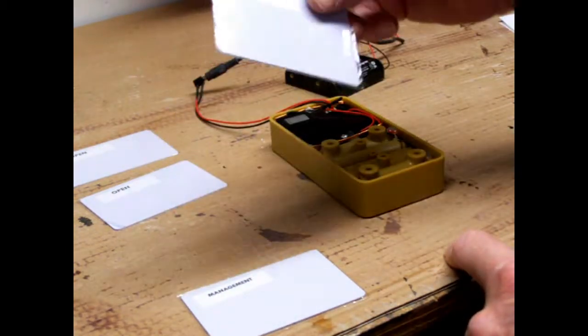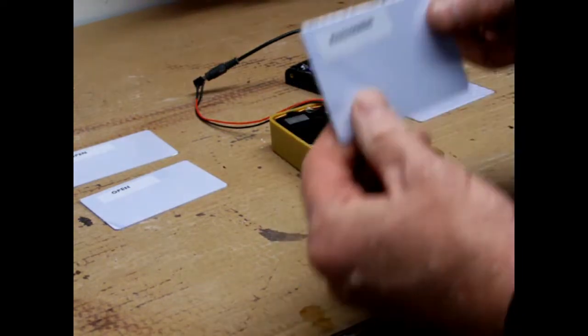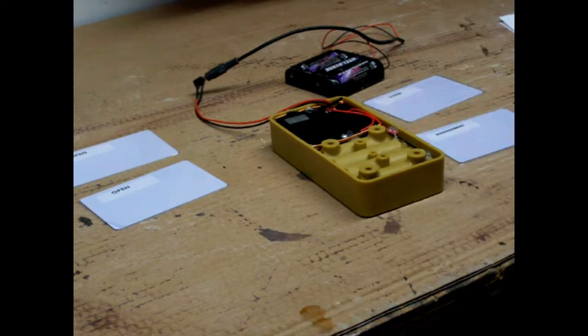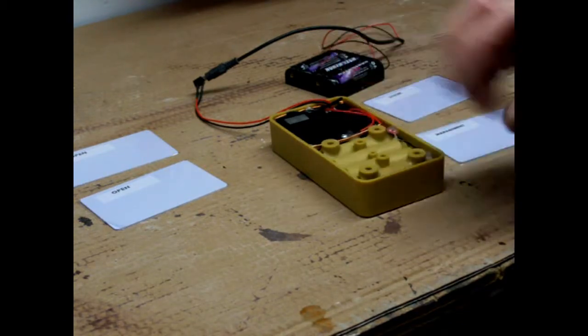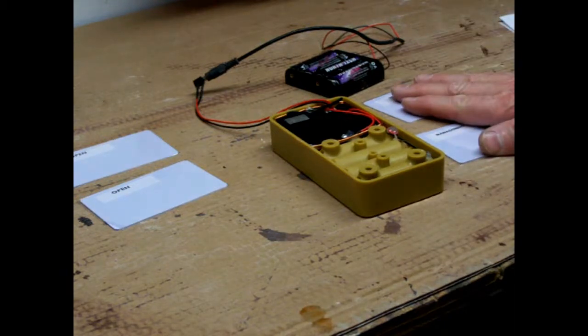So what I'm going to do is I'm going to take the system card, and I'm going to scan that. I'm going to take the management card and scan that and put them off to the side. I'm going to wait until the lock plays a little tune. Okay, now we know that it has programmed and read these two cards into it.